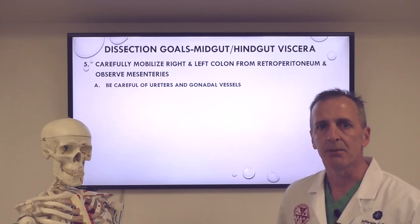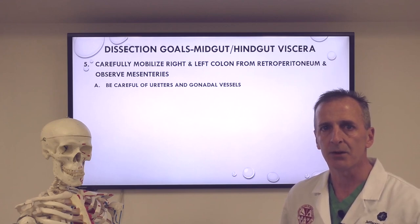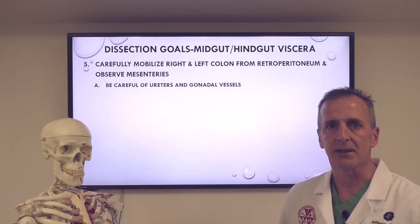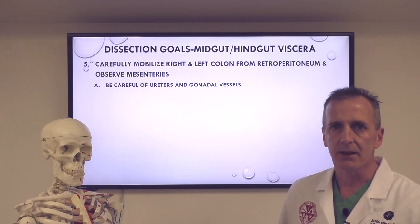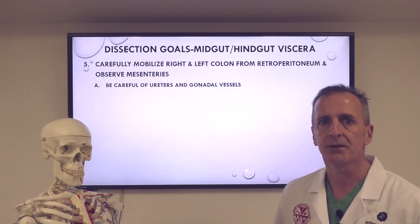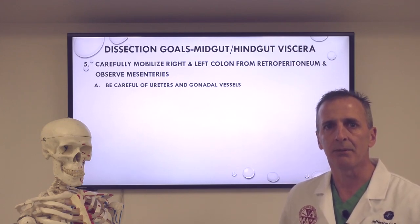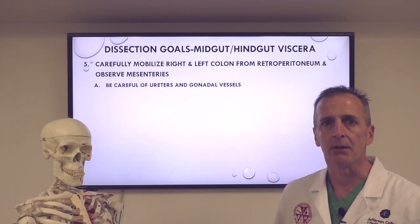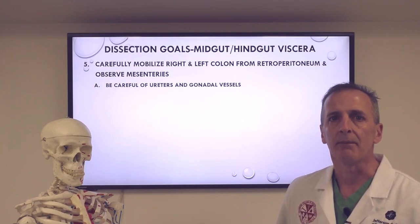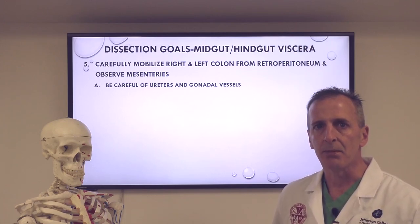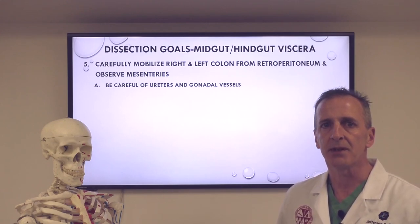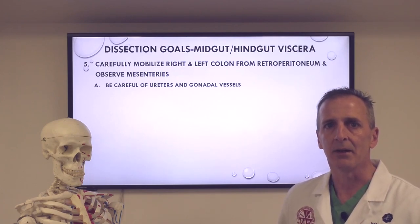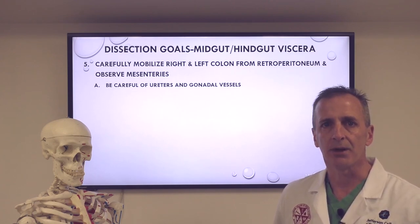As a final step, carefully mobilize the right and left colons away from the posterior abdominal wall by getting into that embryologic plane between their mesenteries and the posterior wall itself. The right and left colons are secondarily retroperitoneal structures, which means their mesenteries fuse with the posterior abdominal wall during embryologic development. This fusion plane can be reopened by incising the peritoneum along the white line of Toldt. The right and left colons can then be bluntly mobilized towards the midline, but be careful not to take the ureters, the gonadal vessels, or even the kidneys with you. We'll demonstrate this as we move to the cadaver now.